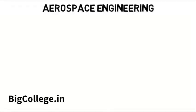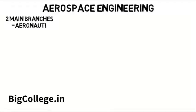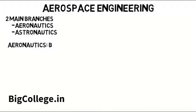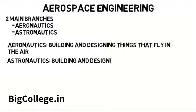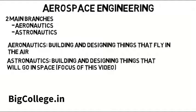Aerospace engineering is broken up into two different main branches: aeronautics and astronautics, which have their similarities and differences. Aeronautics has to do with building and designing things that fly in air, whereas astronautics is about building and designing things that will go into space, which is the focus of this video.